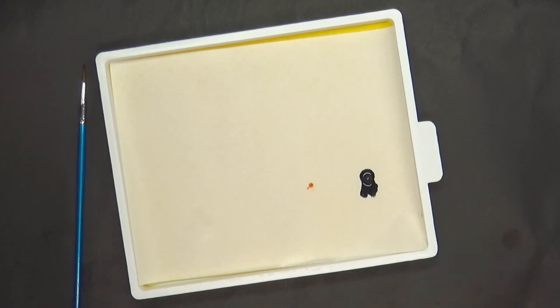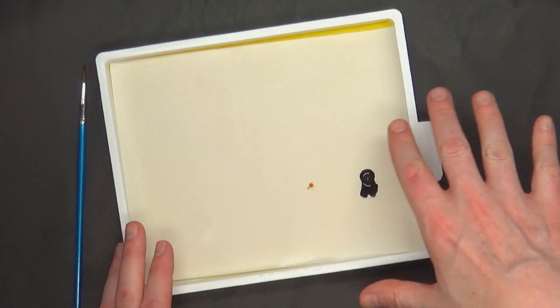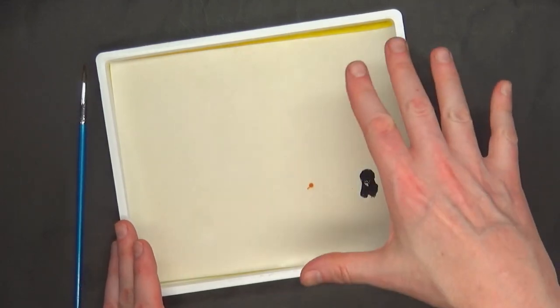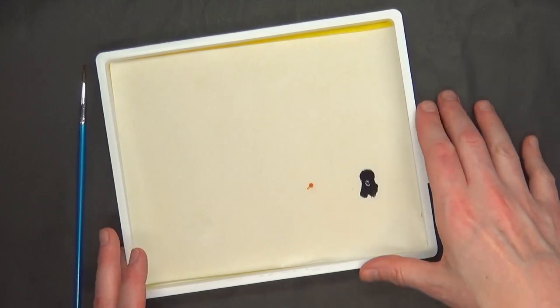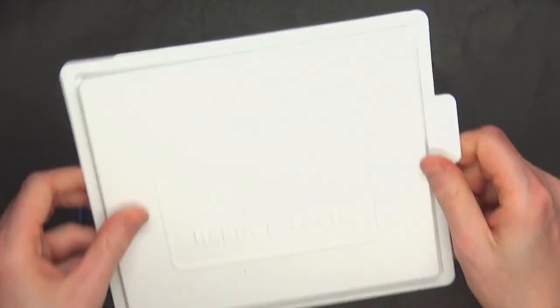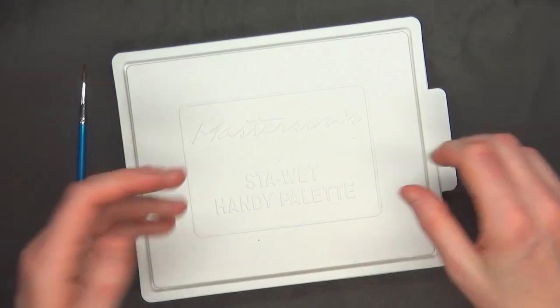That's it for this one folks. I hope you really enjoyed our unboxing and explanation of the Masterson wet palette - it's the eight and a half by seven by one inch depth once you get it all together. It's a great system, it's easy to get.